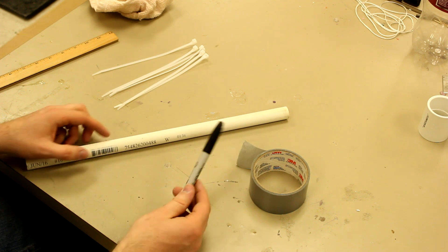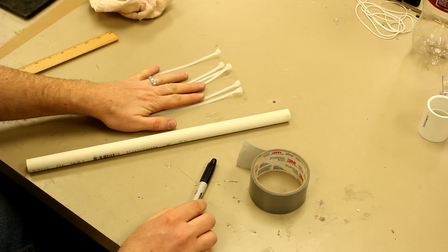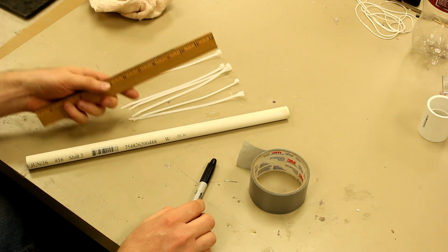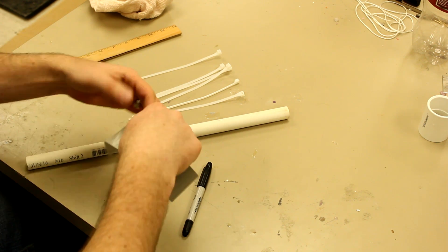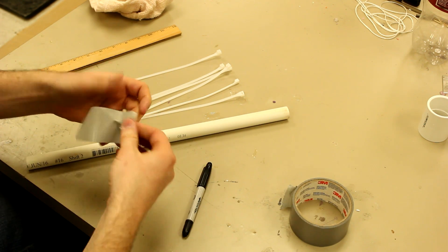You'll also need some duct tape, permanent marker, six medium zip ties, and it's helpful to have a ruler.